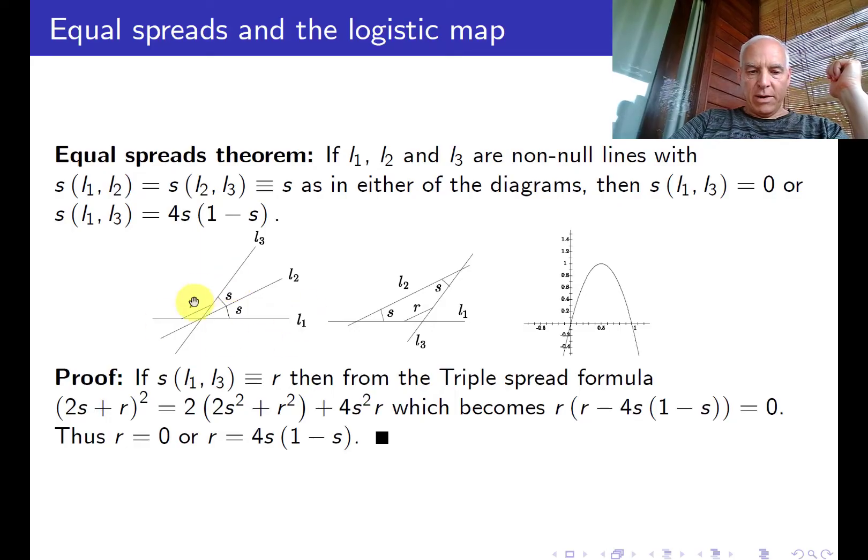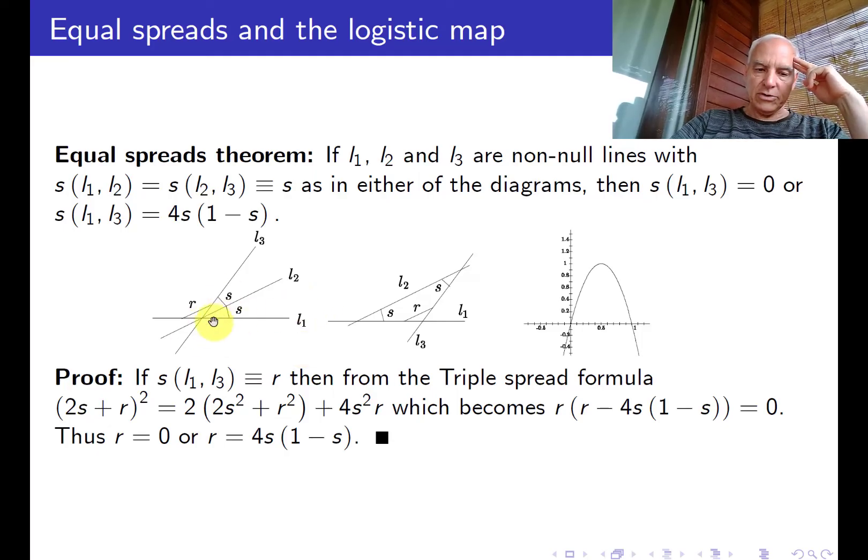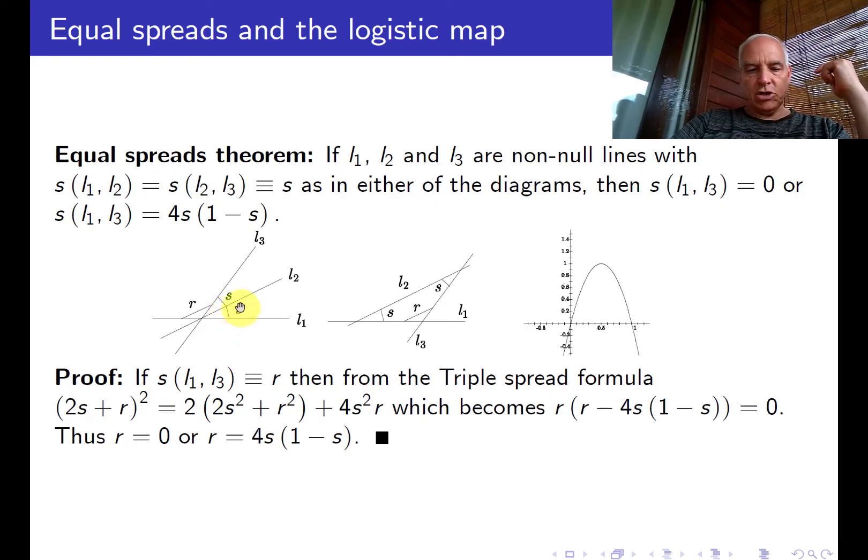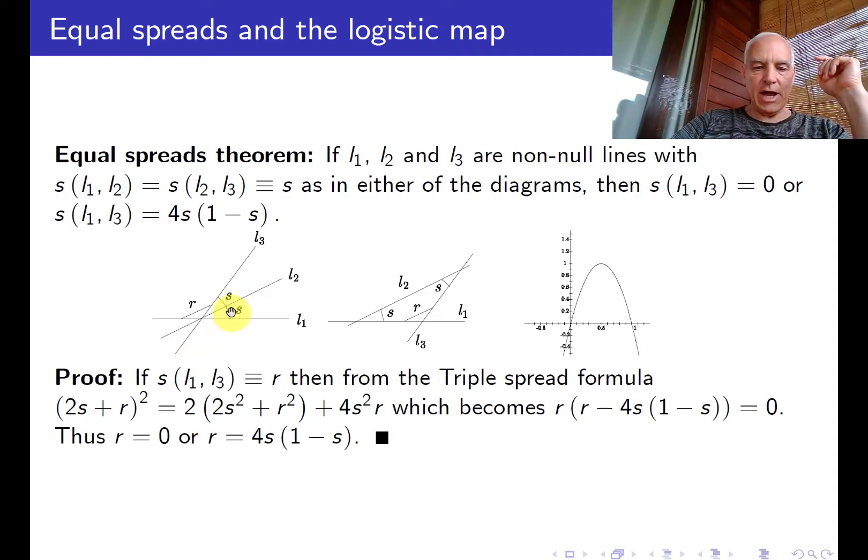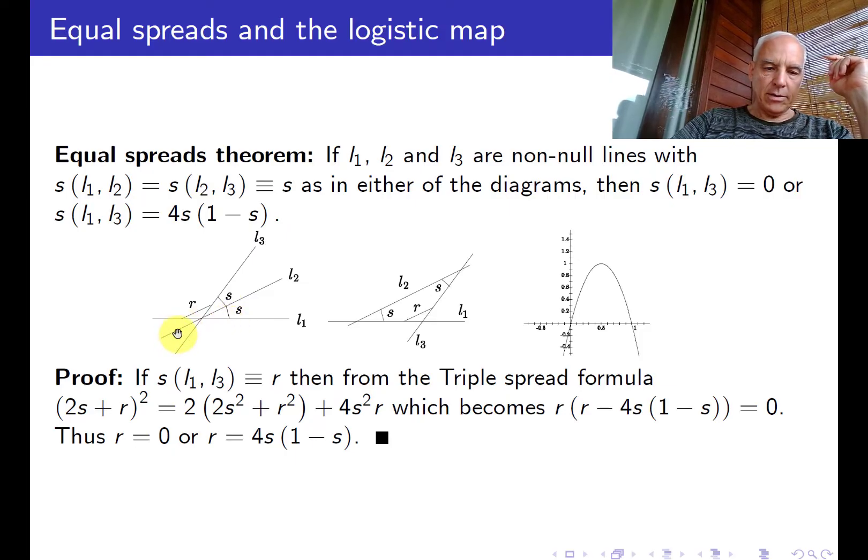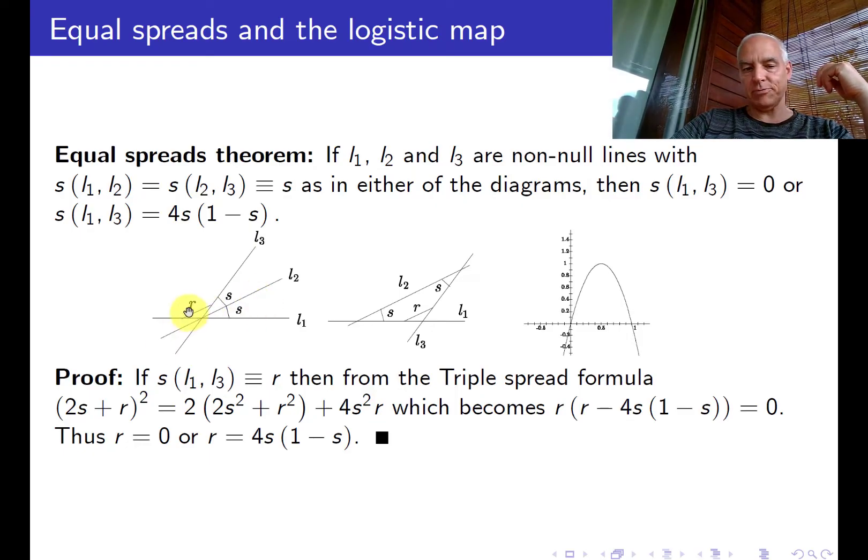In terms of a diagram, here are two possibilities. In this case they have a common intersection, here's the spread S between L1 and L2, and here's the spread S between L2 and L3. I remarked that where we put this little segment is flexible. There's actually four sectors that they determine and we could put this line segment in any one of those four sectors.